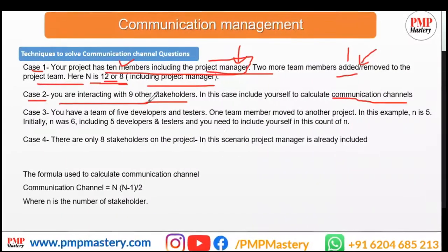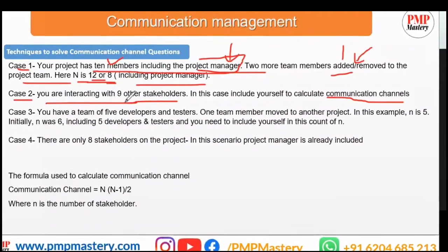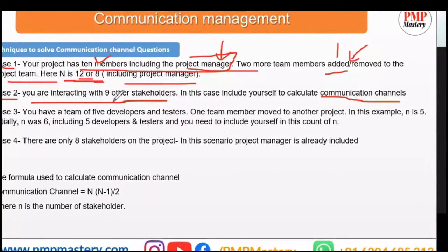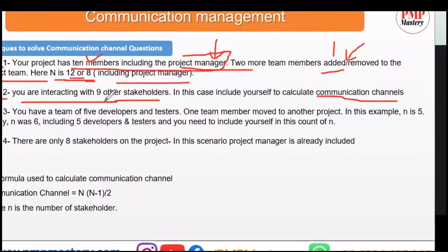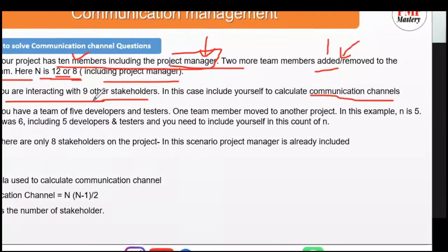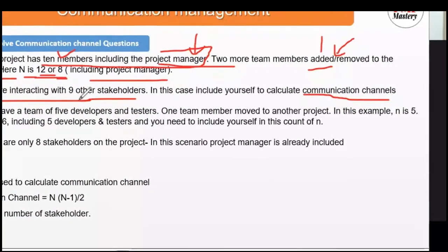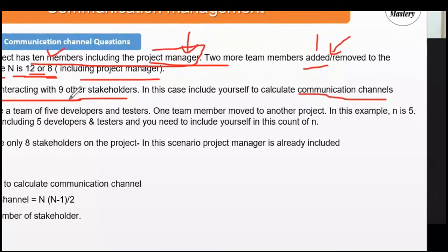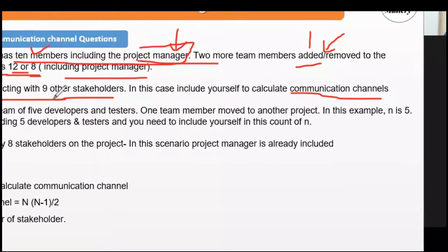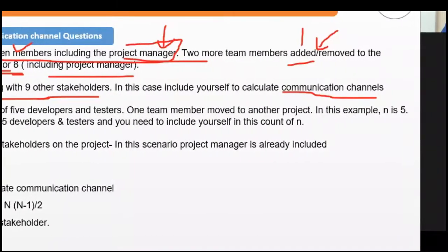Case two: you are interacting with nine other stakeholders and you are the project manager. In this scenario you have to include yourself. So it's one (you) plus nine other stakeholders, giving a total n of 10, and then you calculate the communication channels using the formula.